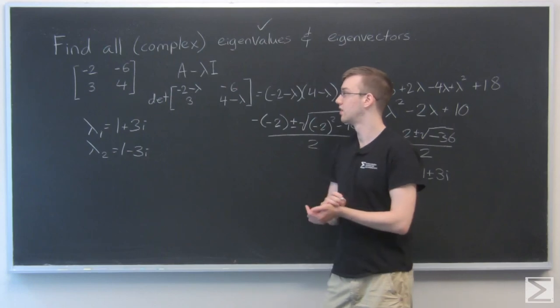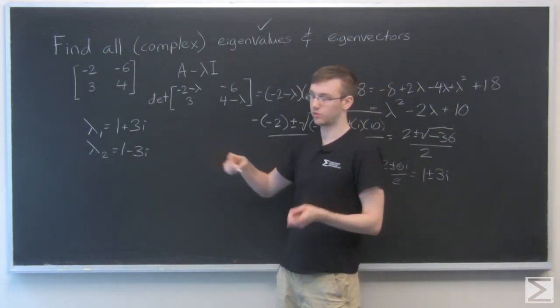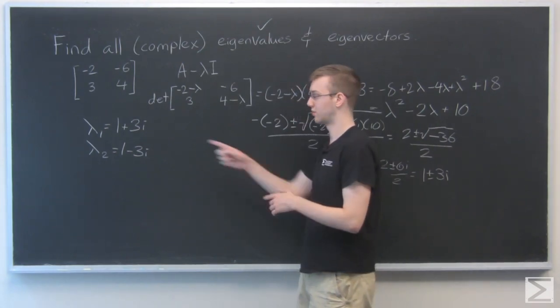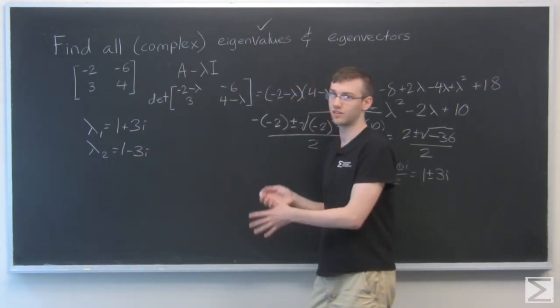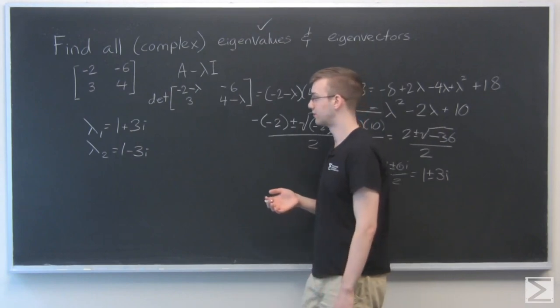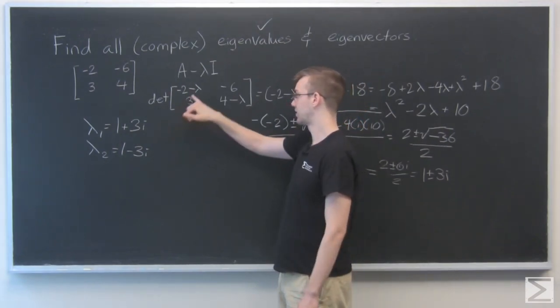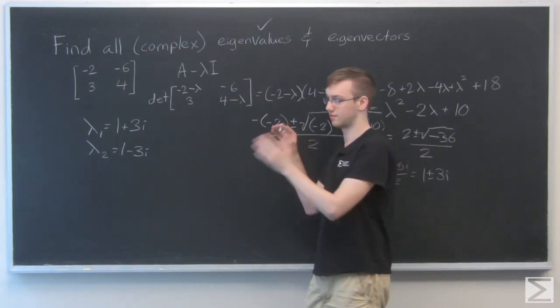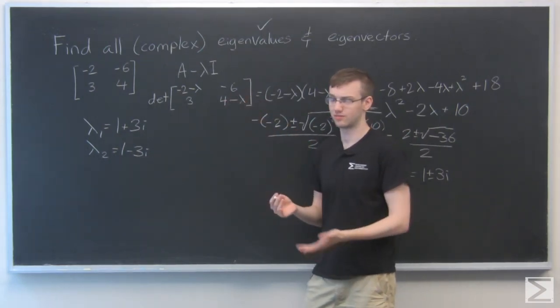And for that, we're going to plug them, we're going to pick one of them, because if you'll remember with complex eigenvalues, if we find one eigenvector, we can find the other. So we're just going to take one of them, plug it in for lambda, and then find the vector that makes multiplied by that equation equal to 0.